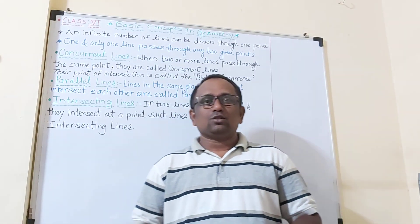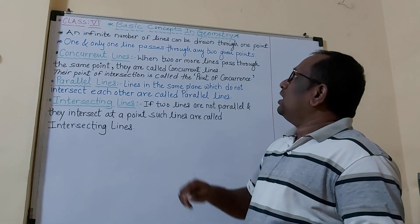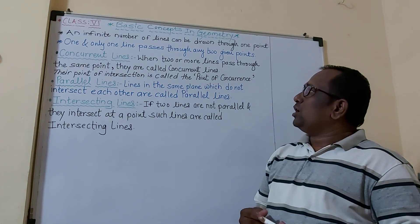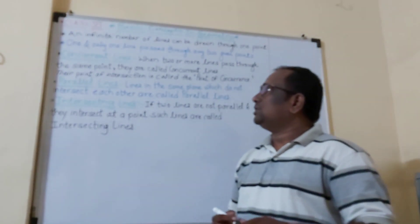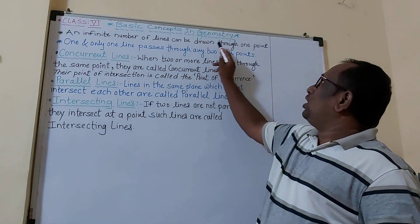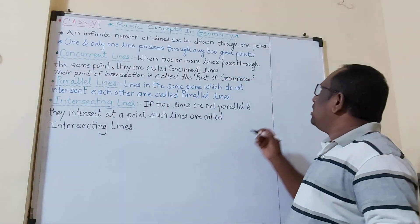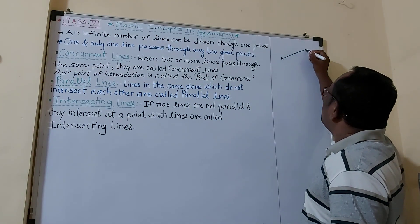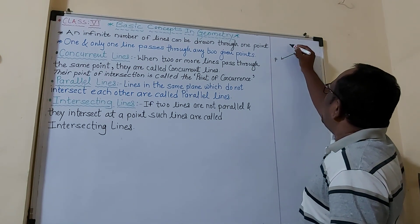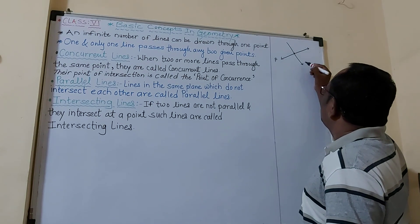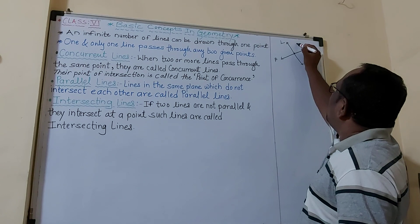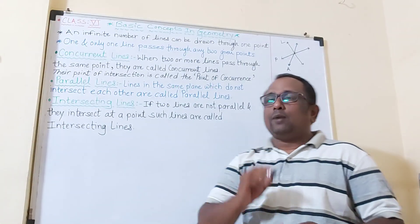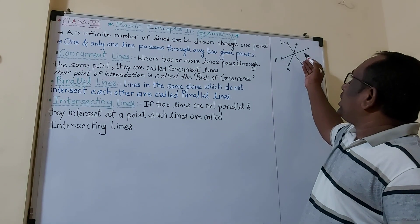Hello students, welcome back. We are learning basic concepts in the geometry chapter. Today we're going to learn about lines. An infinite number of lines can be drawn through one point. For example, I draw a point here, then I draw a line — this is line B. I draw another line through this point, named L, and another one, A.